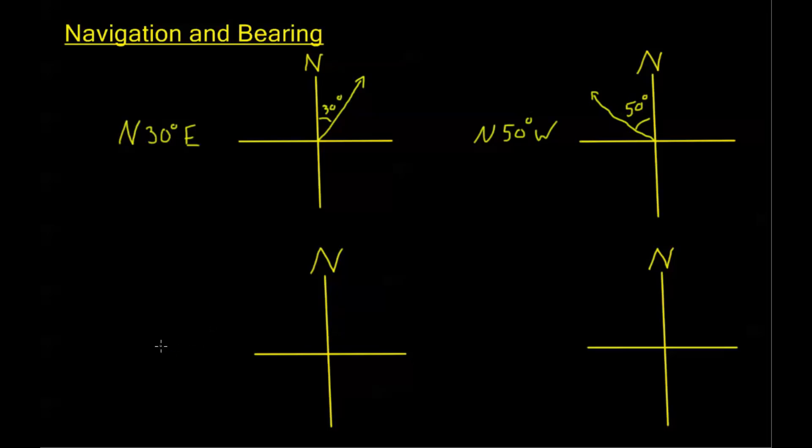Now we can also start from south. South 60 degrees west would be if I'm pointing south and then going 60 degrees towards west. So in other words, I'm going in this direction where the arrow is, but there's a 60 degree angle between south and the direction I'm going towards the west. And something like south 20 degrees east would be starting from south and then moving 20 degrees towards the east. And that's the direction that I'm going.